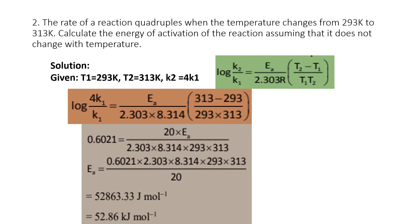The second problem: The rate of a reaction quadruples when the temperature changes from 293 K to 313 K. Calculate the activation energy of the reaction, assuming it does not change with temperature. T1 = 293 K and T2 = 313 K are given. Quadruples means K2 = 4K1. The formula is: log(K2/K1) = Ea / 2.303R × (T2 − T1) / (T1 × T2).